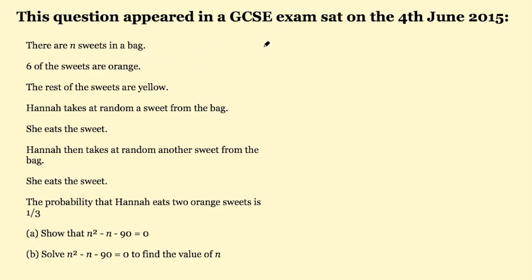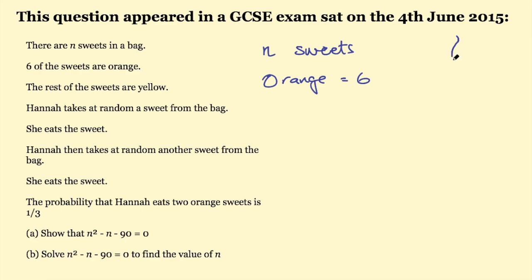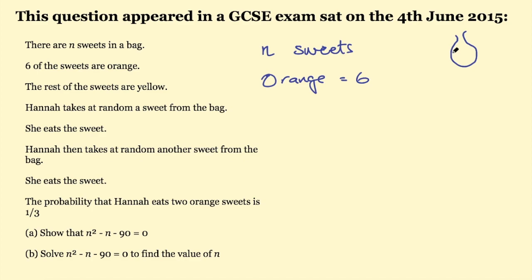So I would start by writing down: there are n sweets in the bag, and six of the sweets are orange, so I write orange equals six. You can also draw a diagram — maybe a little bag with six little sweets — whatever helps your brain to start the problem-solving process.